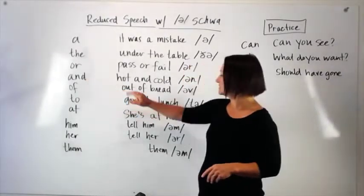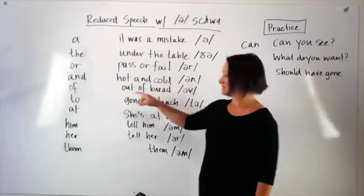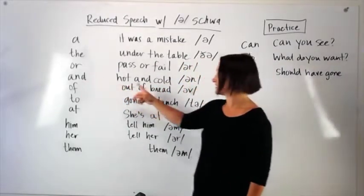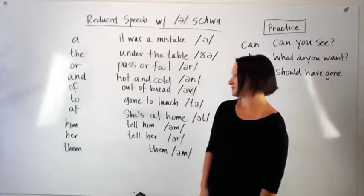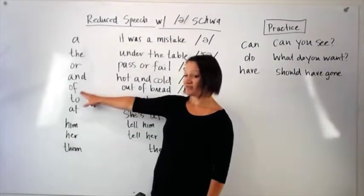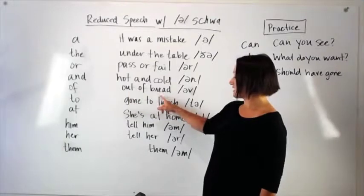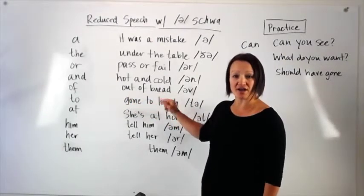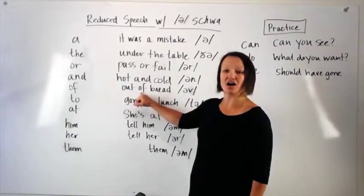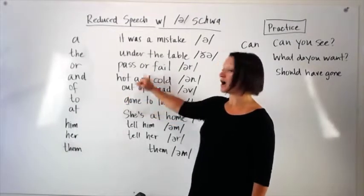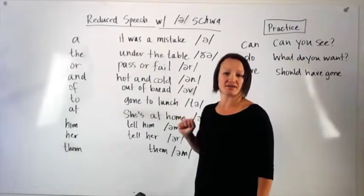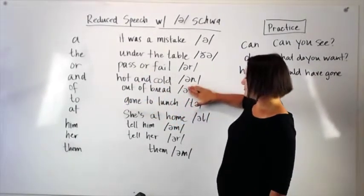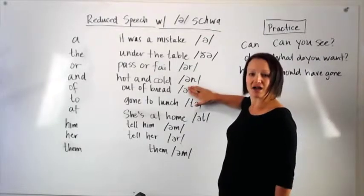And. Hot and cold. It changed from and to in, like this, very short sound. Of. Out of bread. Many times people will even say uh. Out of bread. I'm out of bread. So it might only be like this. Out of bread.